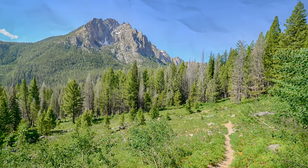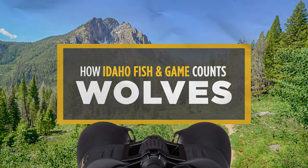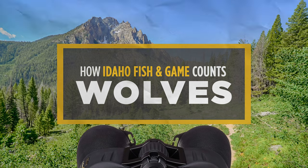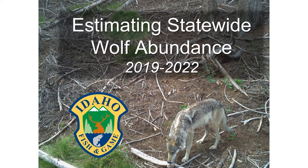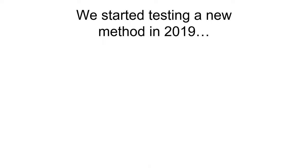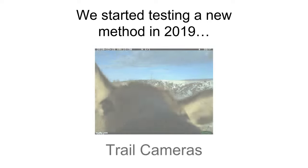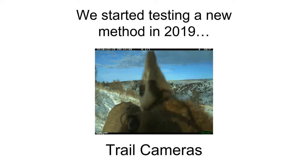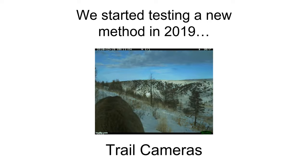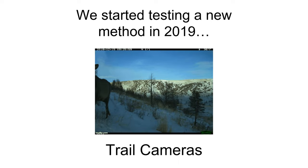Hi, thanks for joining me today to hear about the methods Idaho Department of Fish and Game has used over the past four years to estimate the state's wolf population. Many of the more traditional methods IDFG uses to estimate big game numbers rely on aerial surveys or the capture and marking of animals. Starting in 2019 we began field testing new methods that use arrays of trail cameras to estimate several aspects of large animal populations, including how many there are, which I'll call abundance from here on out.